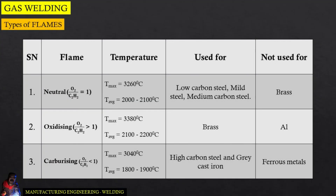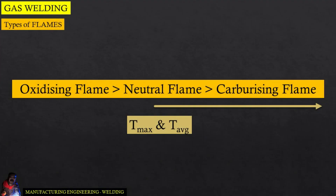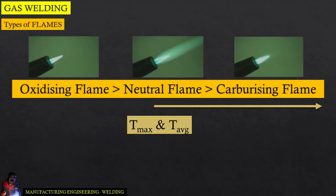In case of carburizing flame, the maximum temperature is 3040 degrees Celsius and the average temperature lies between 1800 to 1900 degrees Celsius. They are used for high carbon steel and gray cast iron, and they are not used for any ferrous material. Regarding maximum and average temperatures, oxidizing flame tops them all, followed by neutral flame and finally the carburizing flame.